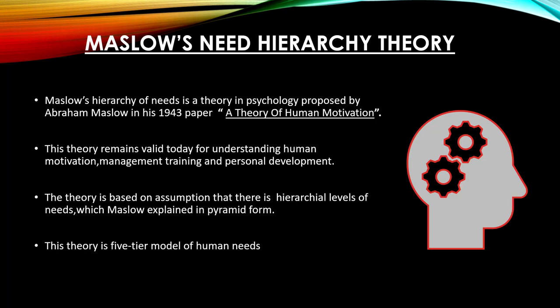Maslow's hierarchy of needs is a theory in psychology proposed by Abraham Maslow in his 1943 paper, which was a theory of human motivation. This theory remains valid till today for understanding human motivation, management training, and personal development. It is based on the assumption that there is a hierarchy of needs, which Maslow explained in pyramid form. It is a five-tier model of human needs.